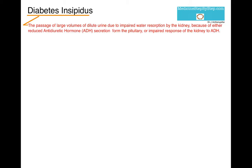Hello everyone, today I'm going to talk about diabetes insipidus. It is the passage of large volumes, more than 3 litres a day, of dilute urine because of impaired water resorption at the kidneys.